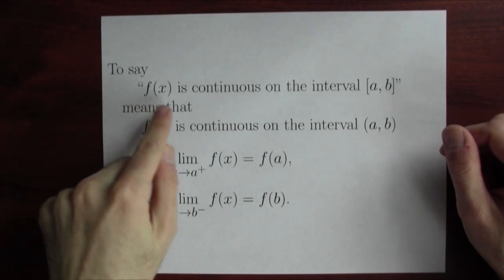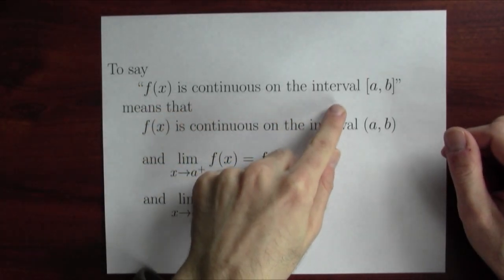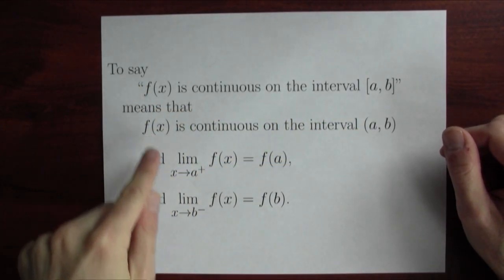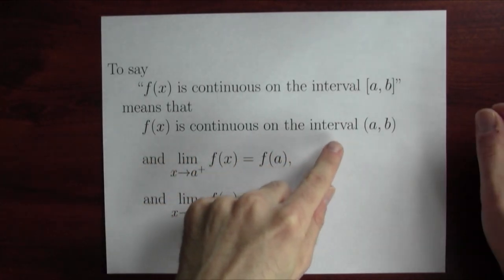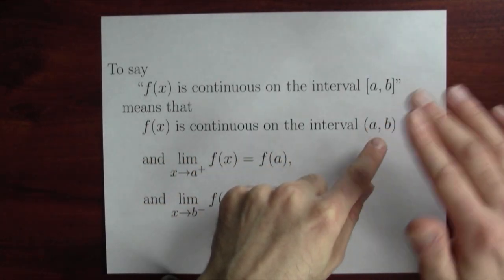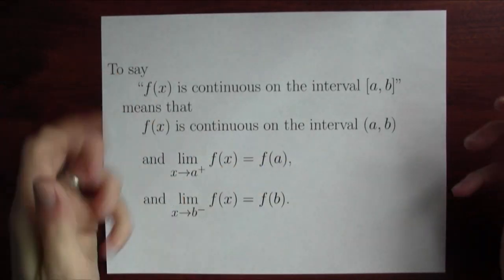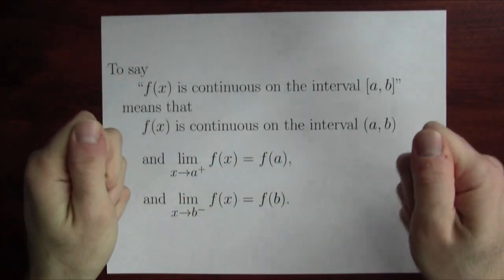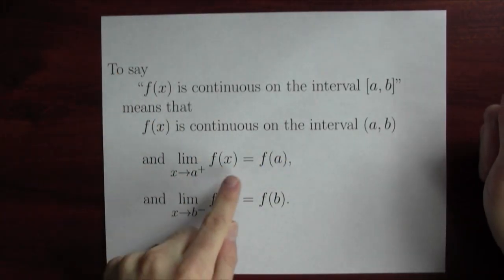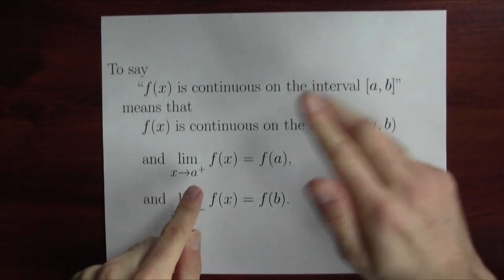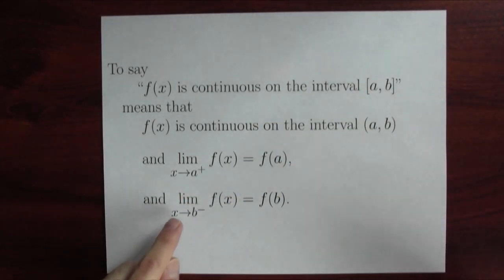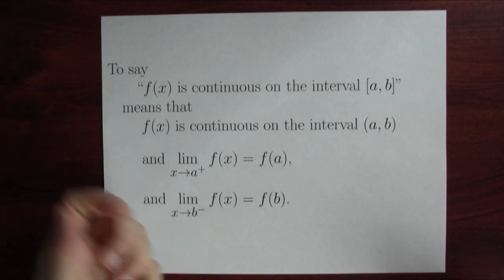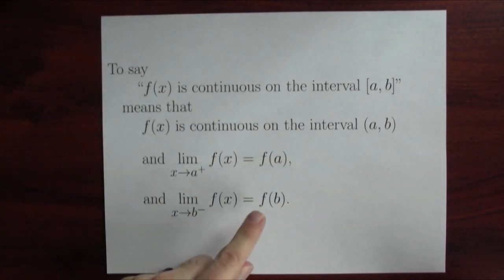If we say that the function is continuous on the closed interval from A to B, we mean that f of x is continuous on the open interval from A to B. But then what happens at A and at B? The limit of f of x as x approaches A from the right-hand side is equal to f of A, and the limit of f of x as x approaches B from the left-hand side is equal to f of B.